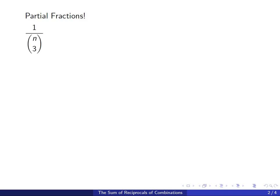So what we're going to do is we're going to look at 1 over n choose 3 and we're going to simplify that first. The denominator is n times n minus 1 times n minus 2 over 6. So simplifying that we get 6 over n times n minus 1 times n minus 2.